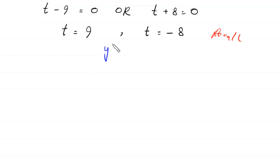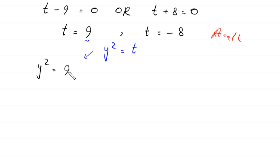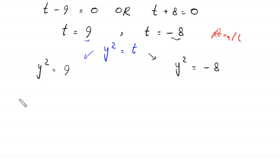When t=9, y²=9, so taking square roots of both sides gives y = ±3. When t=−8, y²=−8.